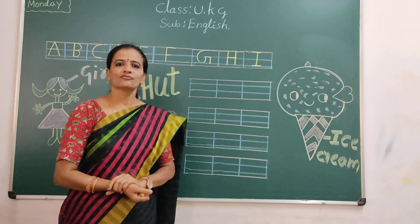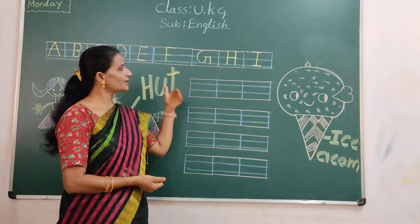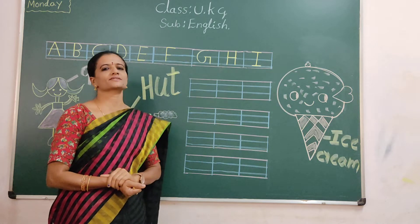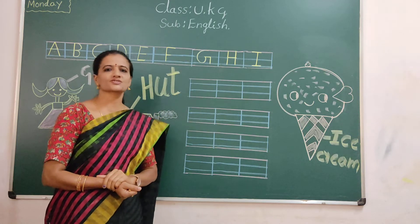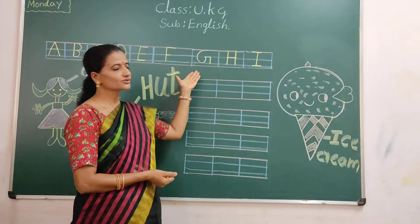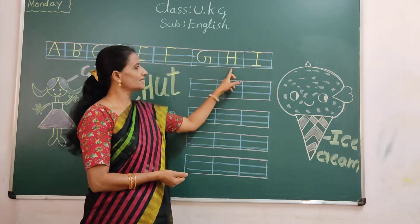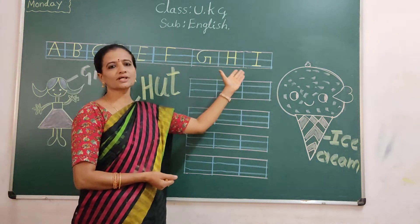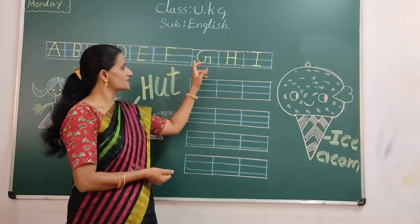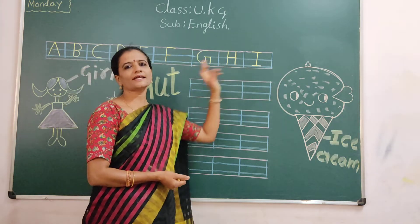So today we are going to learn the remaining 3 English letters. We are going to learn today 3 letters — continuing the English letters G, H, and I.